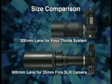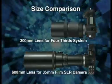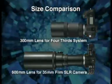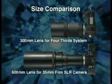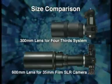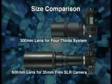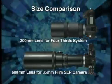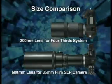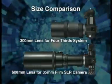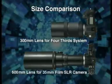Another advantage of the four-thirds system is that its image sensor will allow the downsizing of camera bodies and lenses. For example, since the required focal length is half that of 35mm film cameras, a 600mm telephoto effect can be achieved with a 300mm lens, meaning that the entire lens can be radically reduced in size.